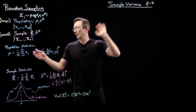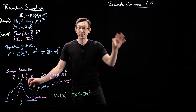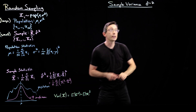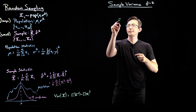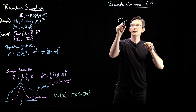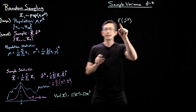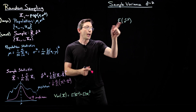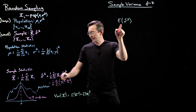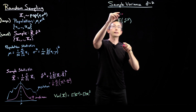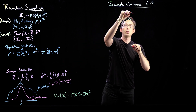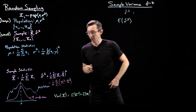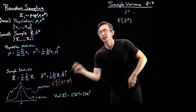Just like to analyze the sample mean we looked at its expected value and variance, we can do the same thing with sigma hat squared. We're going to start by looking at the expected value of sigma hat squared and see what it is an unbiased estimate of — what is it estimating? We'll use the fact that we can write sigma hat squared in terms of a sum over random variables x_i and x-bar.